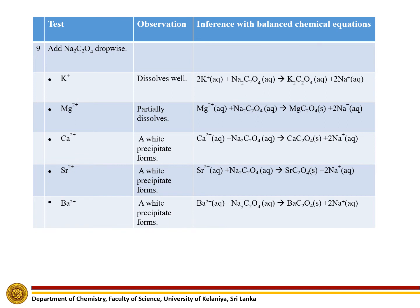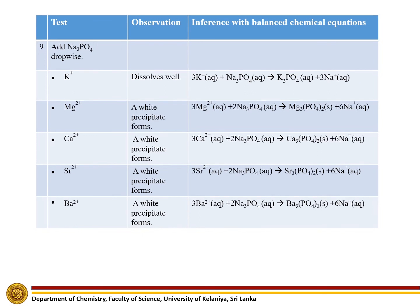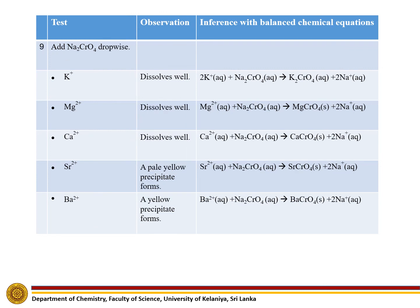Observation and results: When we add sodium oxalate dropwise, only potassium ion will give a soluble salt. Magnesium partially dissolves in sodium oxalate. Calcium, strontium, and barium will give white precipitates with sodium oxalate. When we add sodium phosphate dropwise, potassium will give a soluble salt, while magnesium, calcium, strontium, and barium will give white color precipitates. When we add sodium chromate dropwise, potassium, magnesium, and calcium dissolve well, but strontium gives a pale yellow precipitate and barium gives a yellow precipitate with sodium chromate.